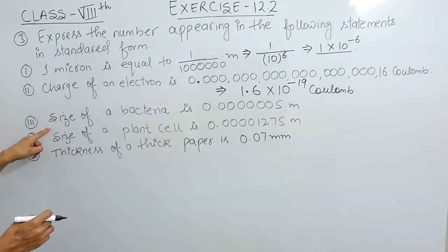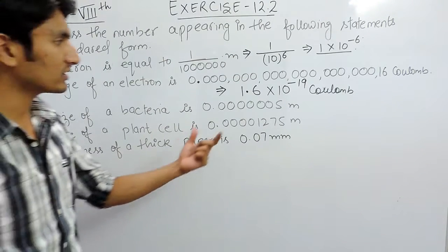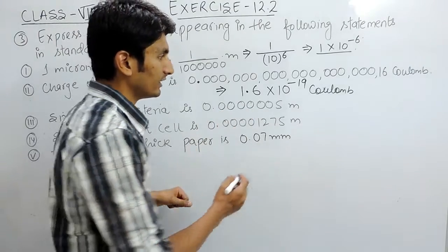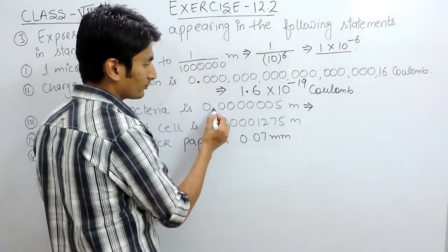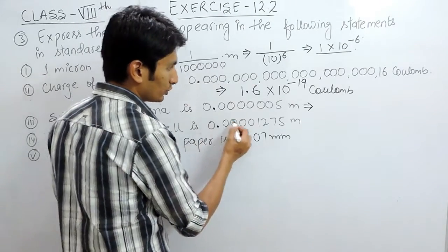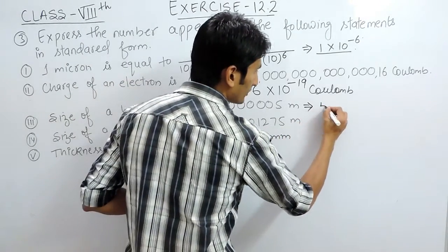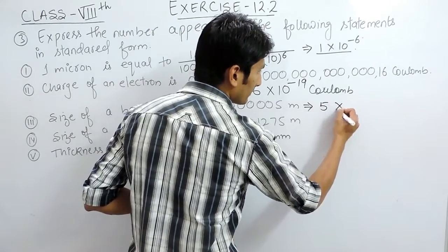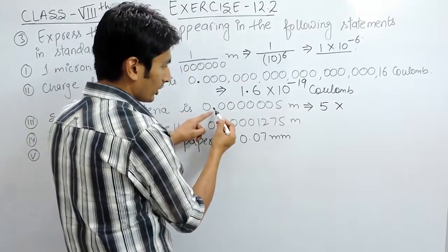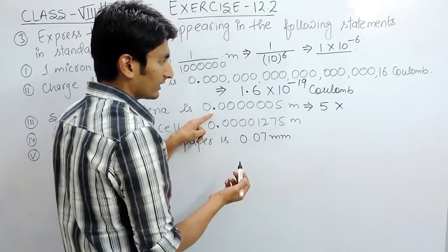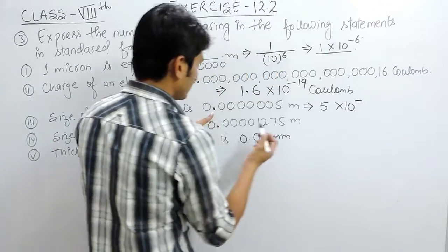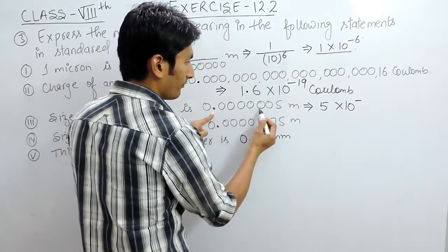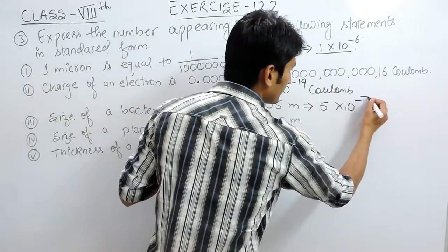In the third part, you have to convert the size of the bacteria, which is this many meters, into standard form. For standard form, shift the decimal to the right-hand side. That gives 5 multiplied by 10 raised to power minus — counting: 1, 2, 3, 4, 5, 6, 7 — so minus 7.